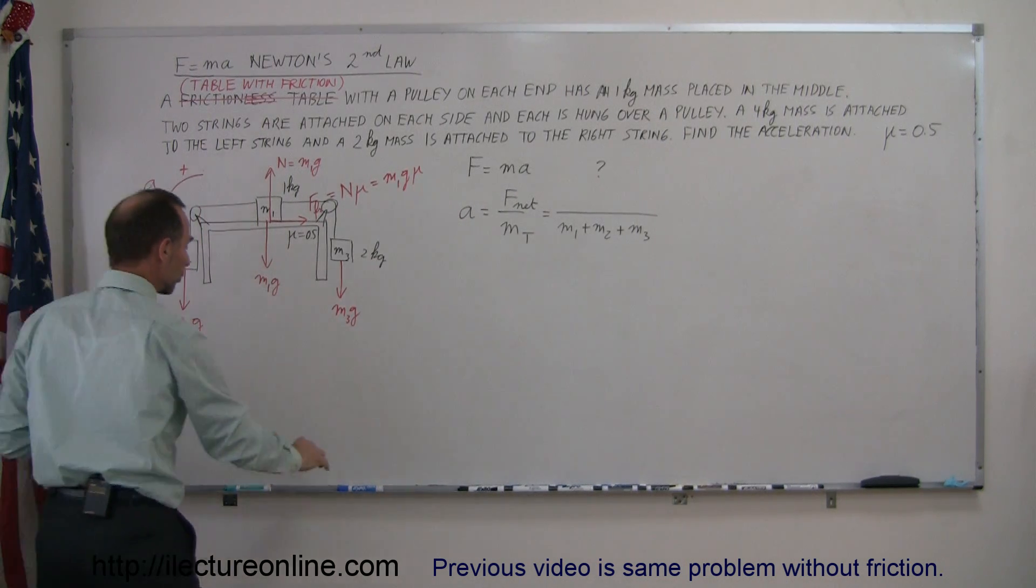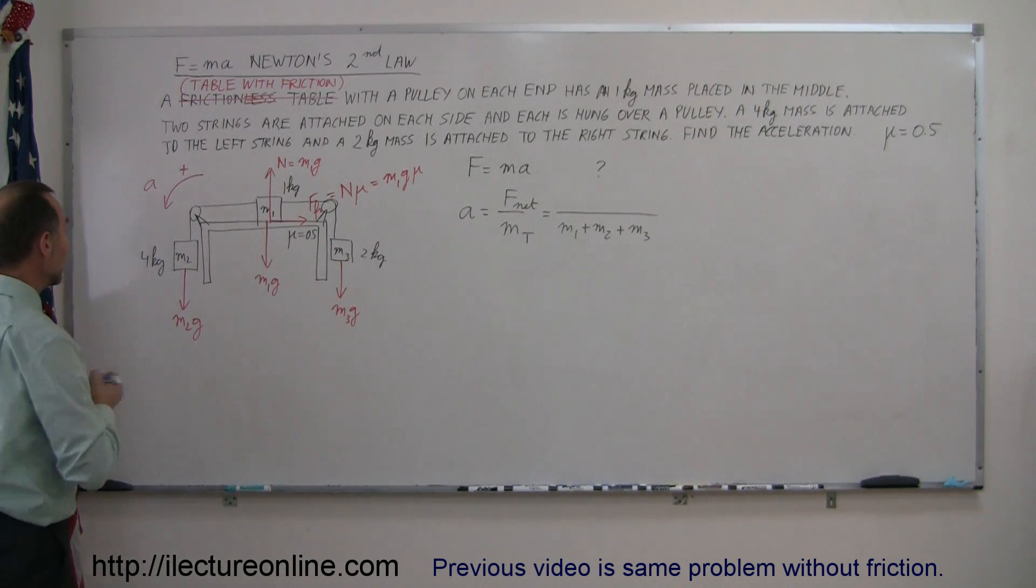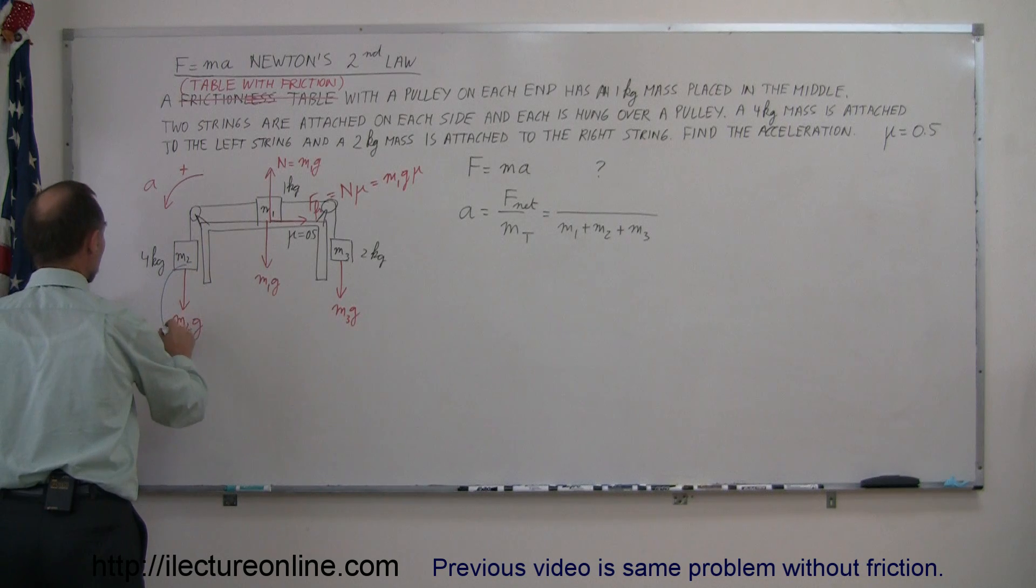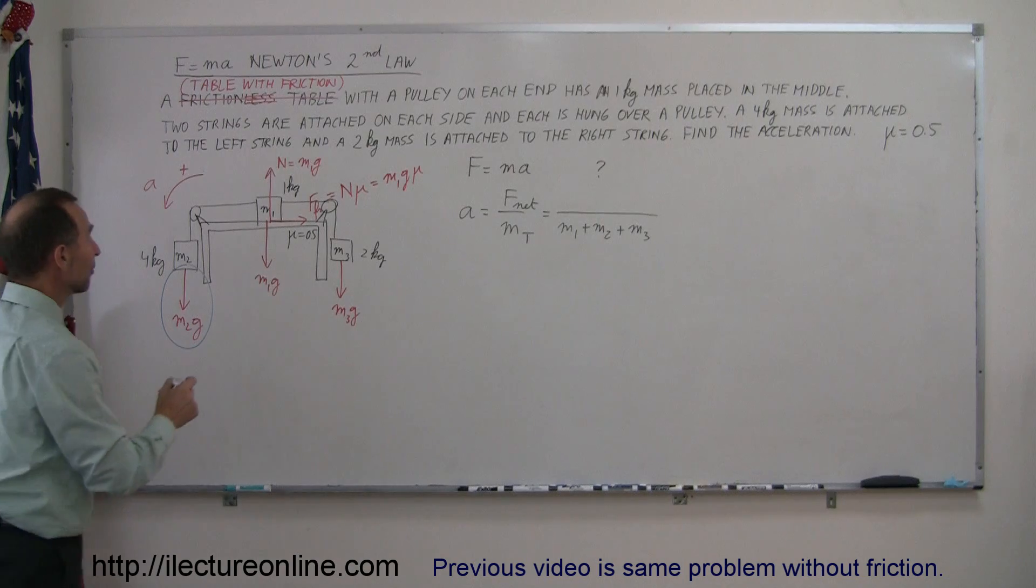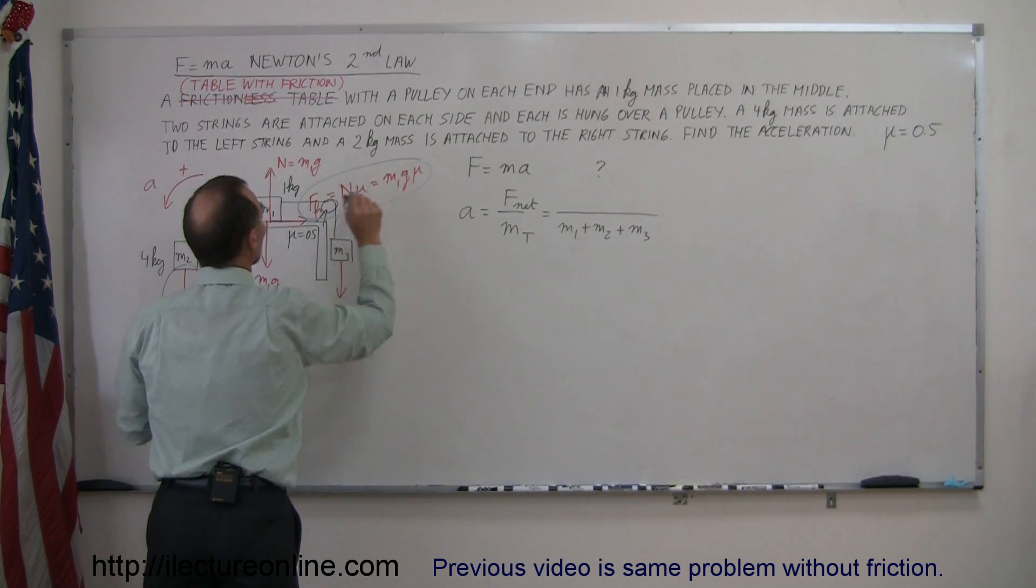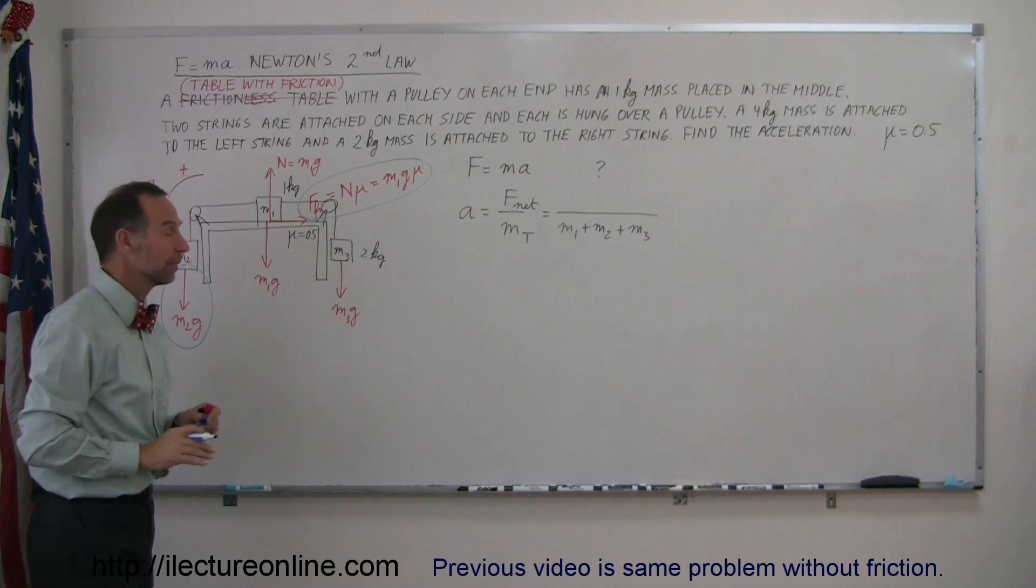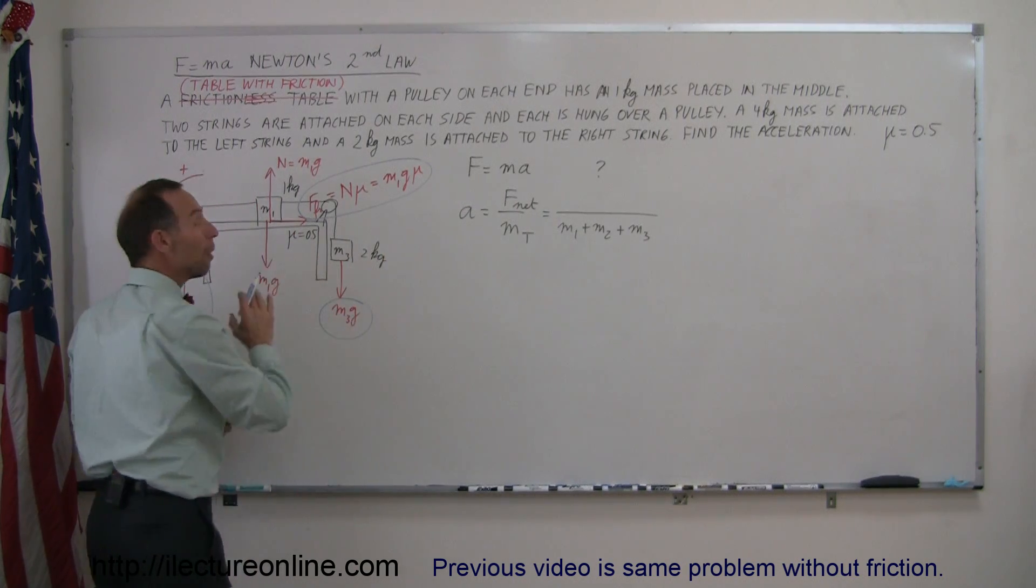Now we realize there are three forces affecting the acceleration. We have the M2g force which aids acceleration, that's what's causing it. We have the friction force which opposes acceleration, and then we have M3g which also opposes acceleration.